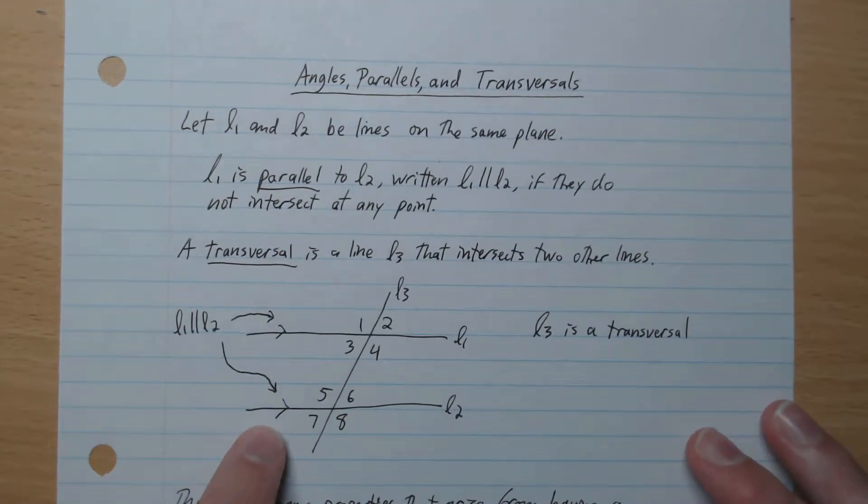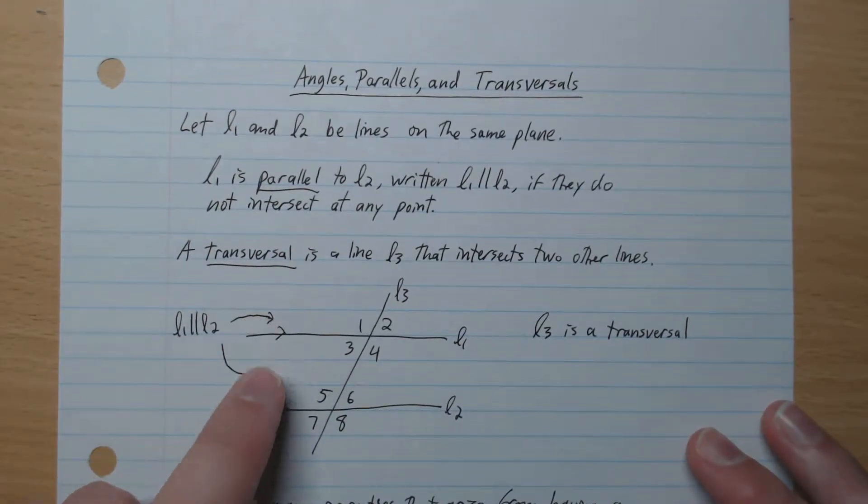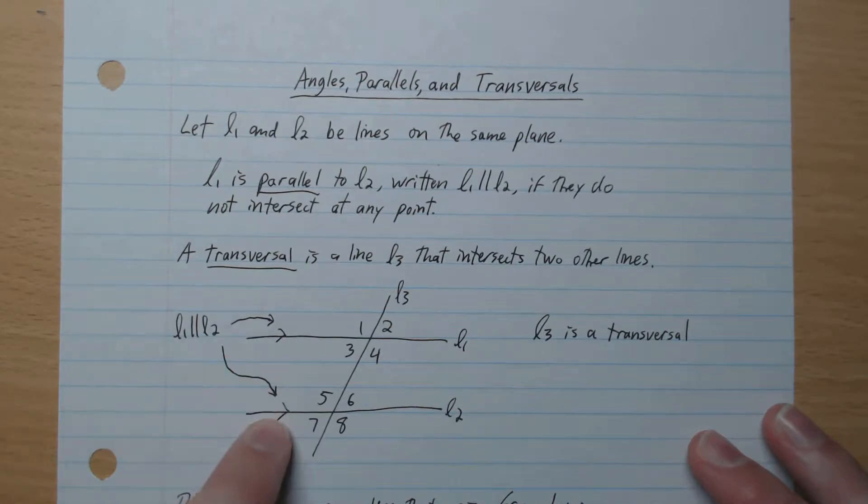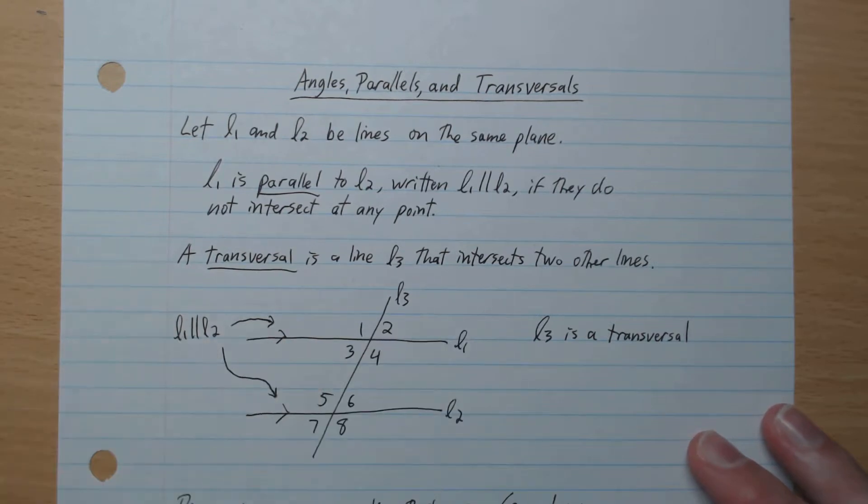So we have here two parallel lines. We indicate they're parallel by having these little arrows on both of them. This single arrow means it's parallel with this single arrow, so they're parallel like that.